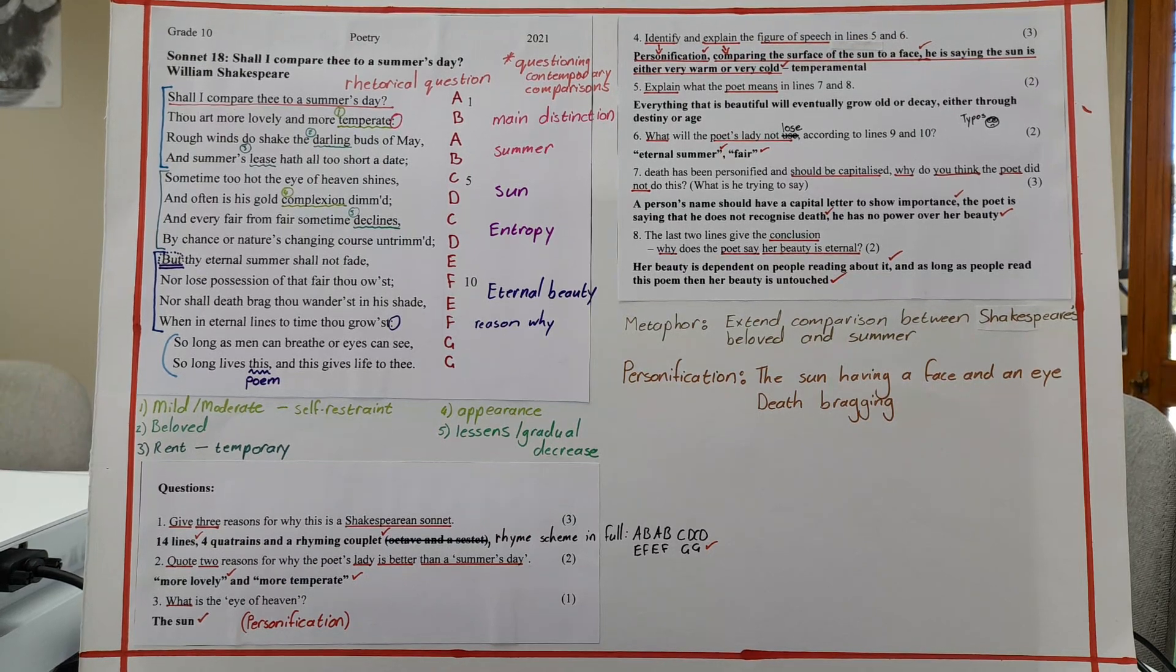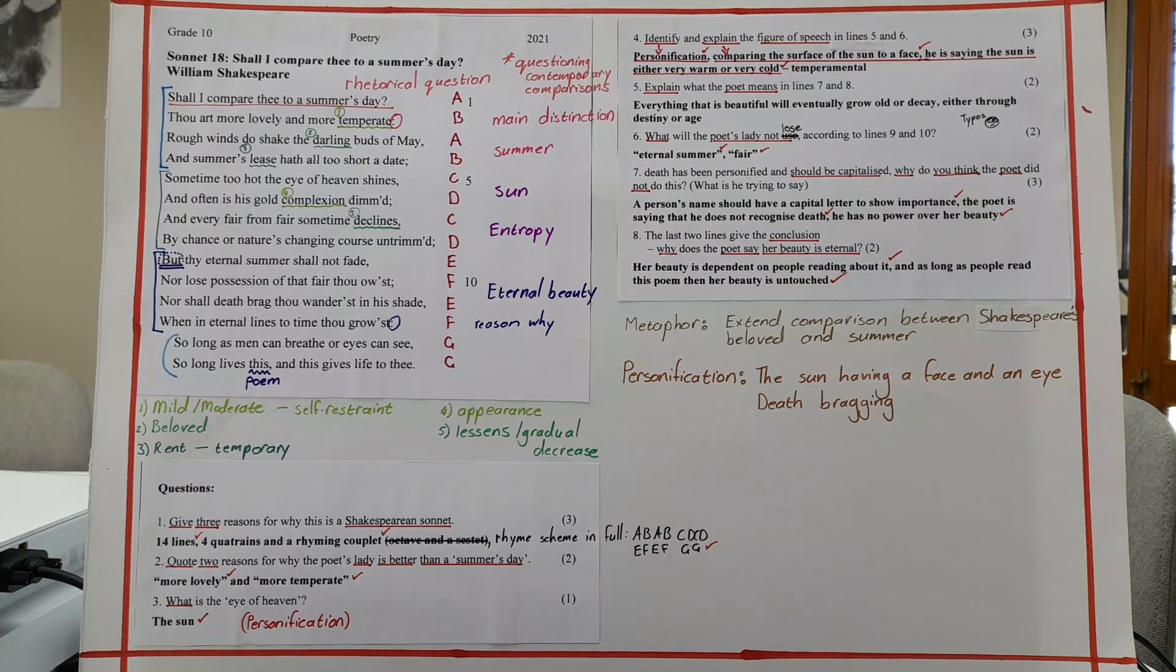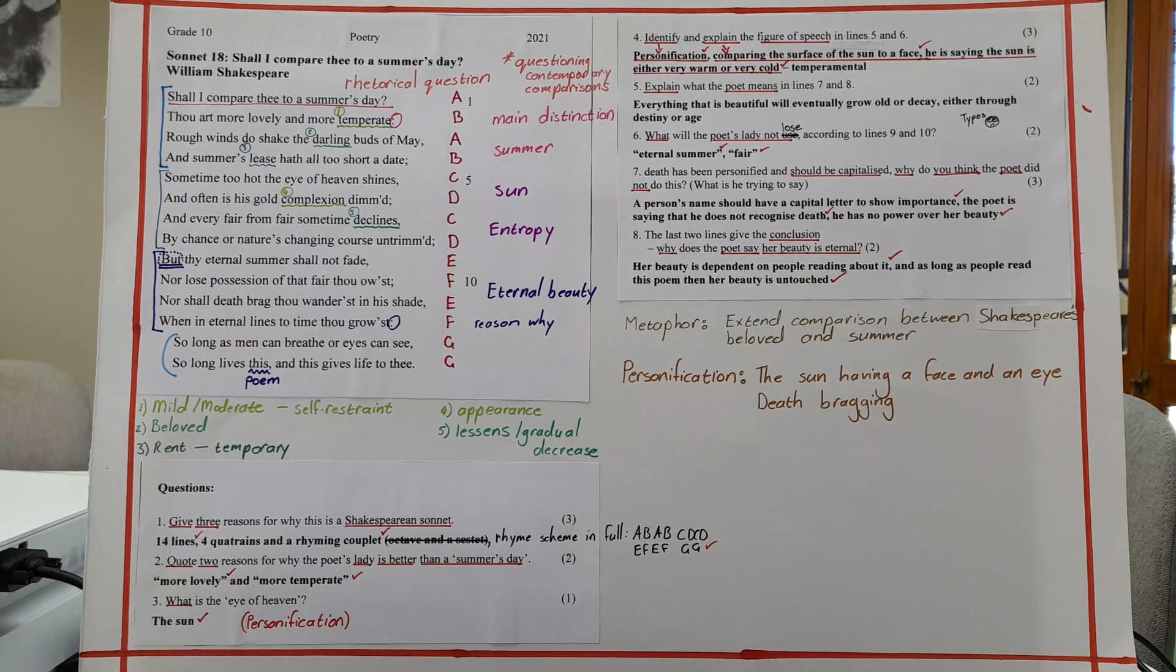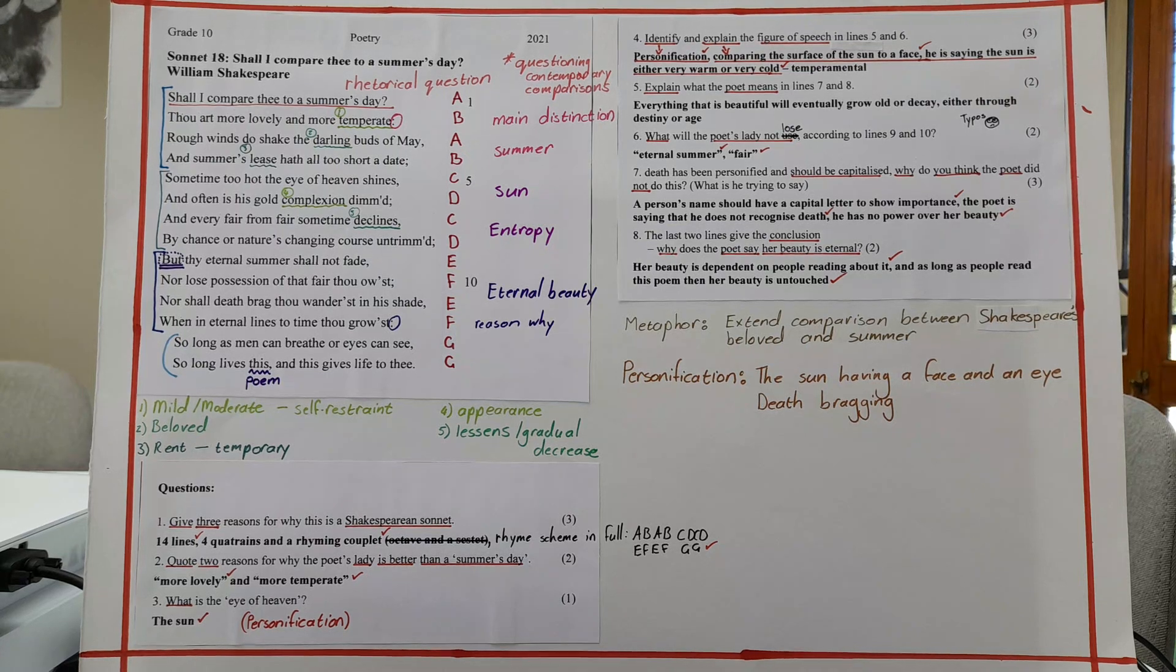Number eight, the last two lines give the conclusion. So why does the poet say her beauty is eternal? Because her beauty is dependent on people reading about it. And as long as people read the poem, then her beauty is untouched. Another way you can say it is the beauty is dependent on people being alive and reading the poem and the poem existing. And as long as that is happening, then we read about her beauty and it continues. So anything along those lines.